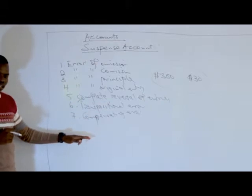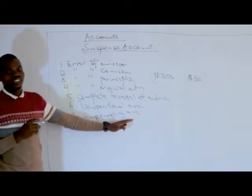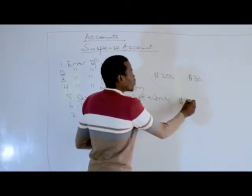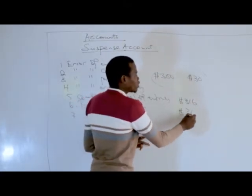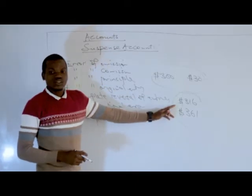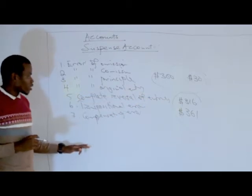Transpositional error is an error that occurs when the sequence or the order of digits has been changed. For example, let's say our transaction is for 316 and then when we record in the books of accounts, we record 361. The order of the sequence of digits has been changed. This is what is known as a transpositional error.